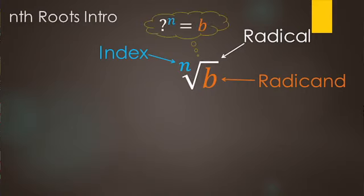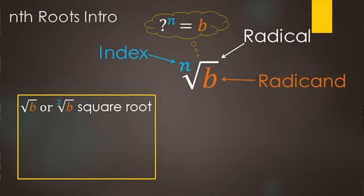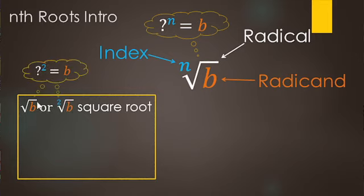So what does this mean? It basically means: what number to the nth power equals the number underneath the radical? We have square roots — the square root of B, or the second root of B — meaning what number times itself gives you this number. So for the square root of 49, what number times itself equals 49? That's seven.